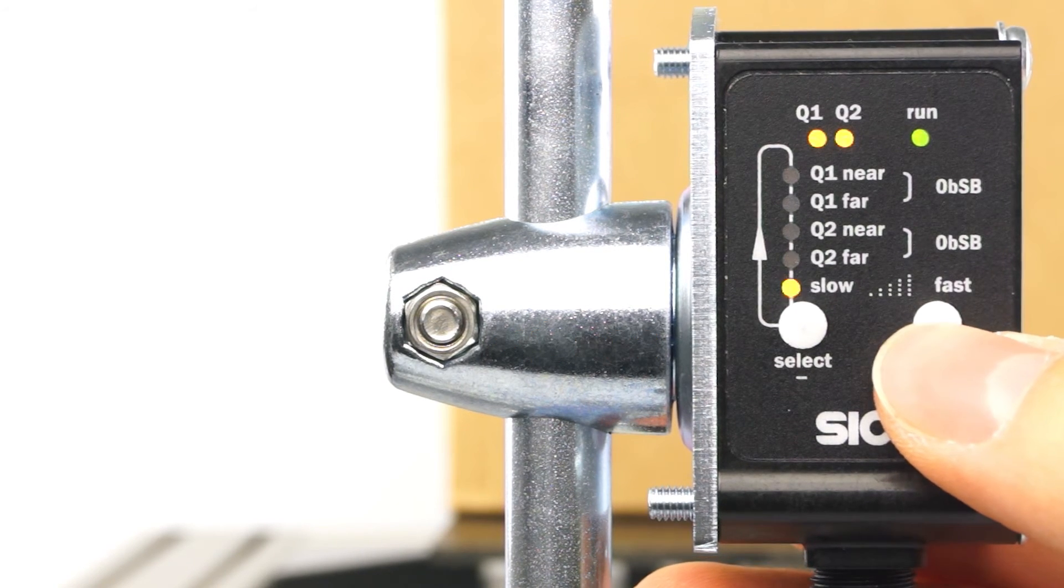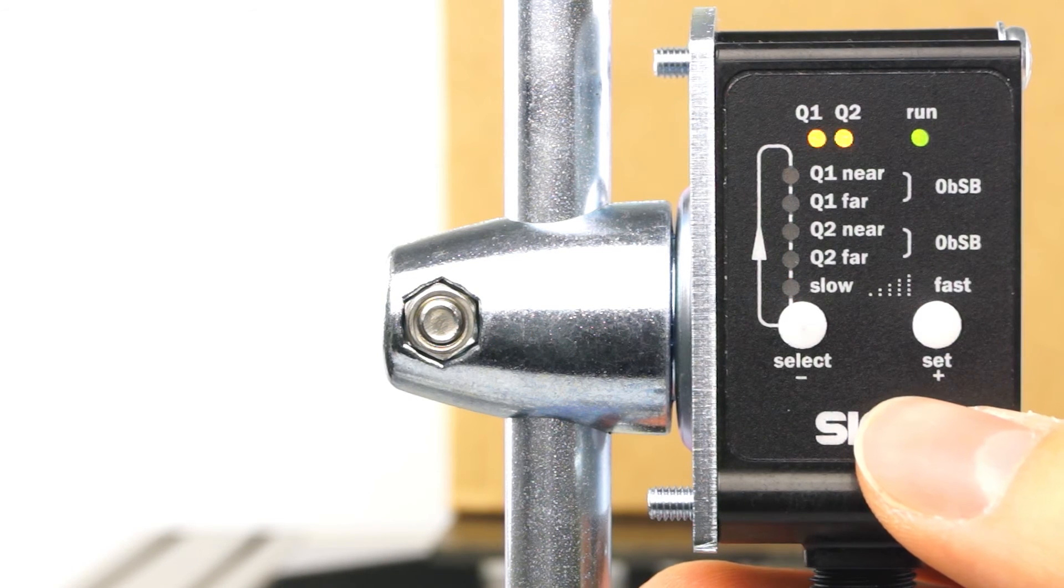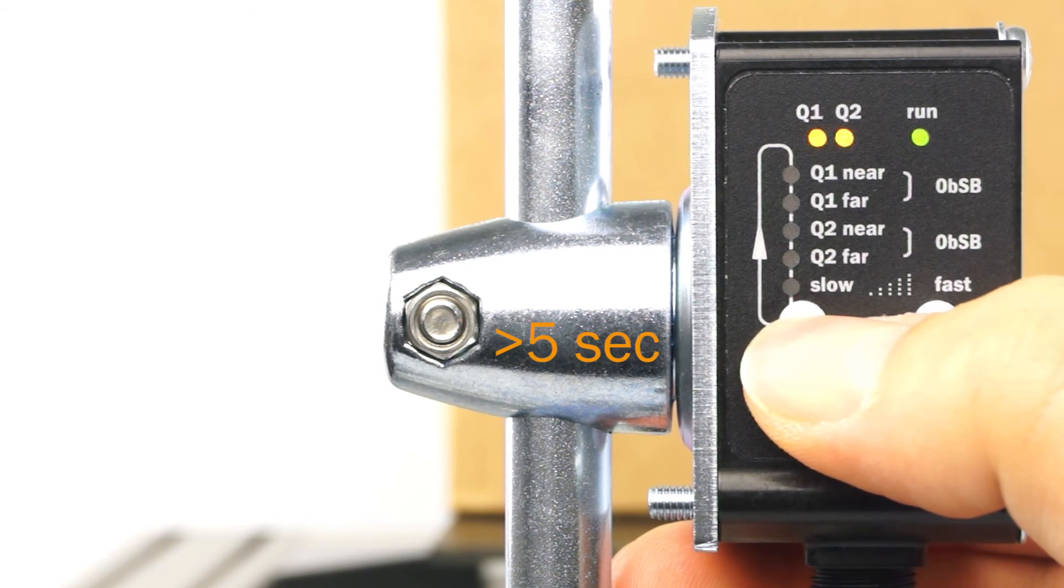Press the set button for more times until the LED is blinking in your chosen frequency. In this example it is 5 times. Now you can lock the sensor.